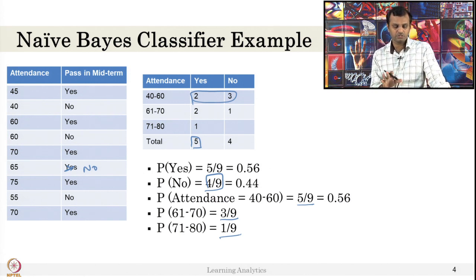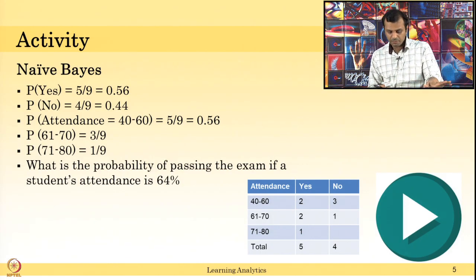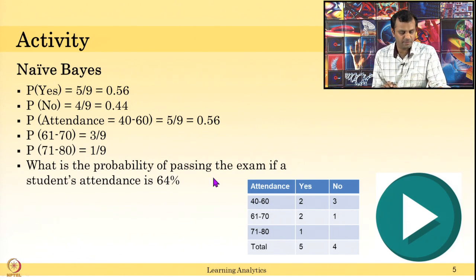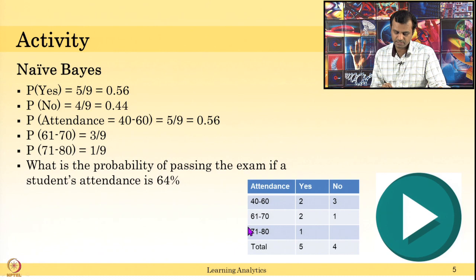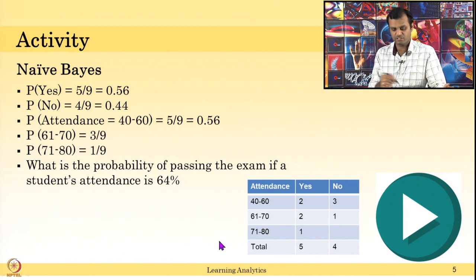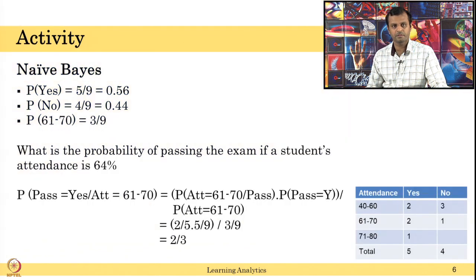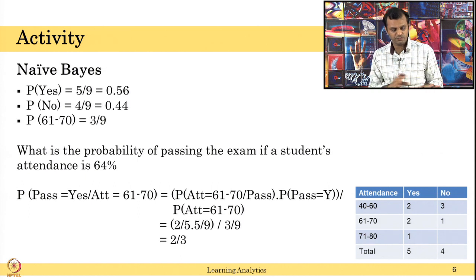Let us use this to answer some questions. Consider this table — we want to ask: what is the probability of passing the exam if a student's attendance is 64? That falls in the 61 to 70 bin. If you apply Bayes theorem, you want to compute: probability of pass given attendance 61 to 70 equals probability of attendance 61 to 70 given the student passed, times probability of pass, divided by probability of attendance 61 to 70.